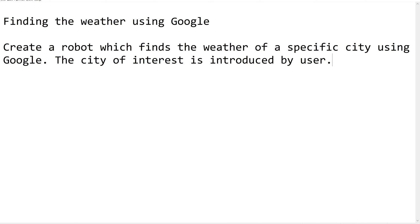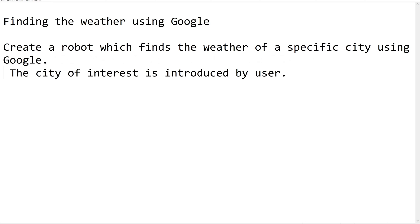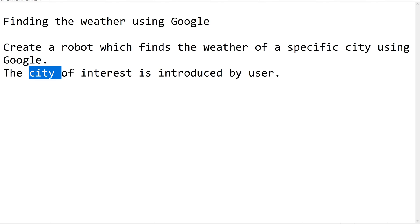The question here is: we are going to find the weather using Google — create a robot which finds the weather of a specific city using Google. The city is going to be a dynamic value, so you are supposed to take the city value from the user. Now let us quickly open our UiPath Studio.